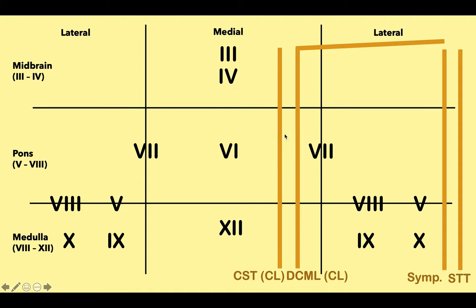The corticospinal tract and DCML run medially — the decussation is in the lower medulla, so in the midbrain they carry fibers to or from the contralateral side. On the lateral brainstem we have the spinothalamic tract carrying pain and temperature fibers, which decussates in the spinal cord. We also have sympathetic fibers — knocking those out causes Horner syndrome: miosis, ptosis, and anhydrosis. The cerebellar peduncles are also lateral; if knocked out, you get ipsilateral ataxia and cerebellar signs.